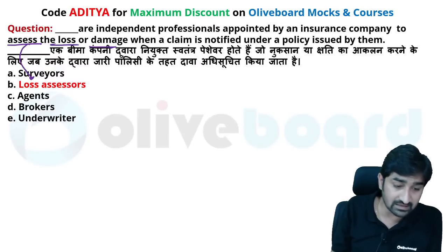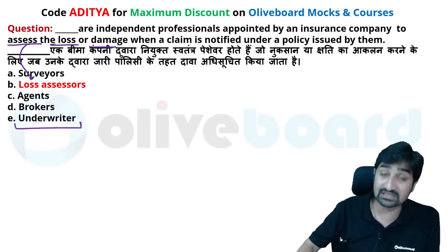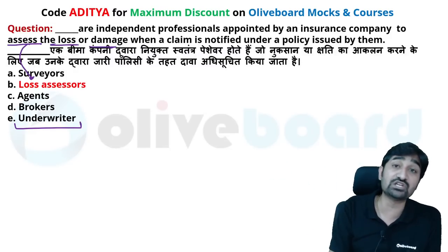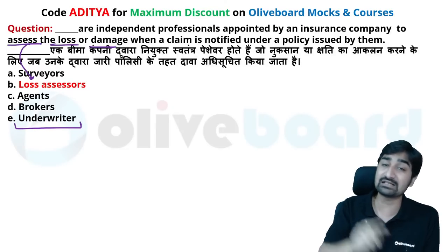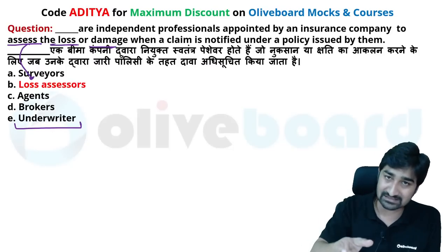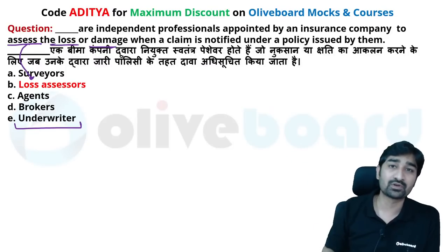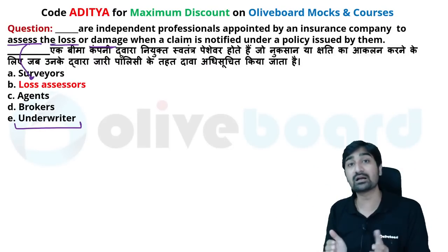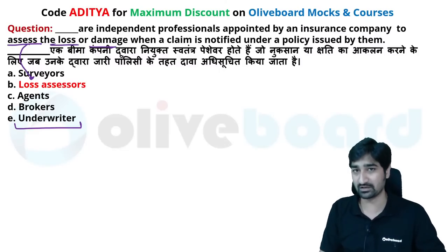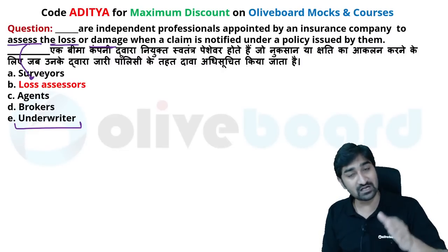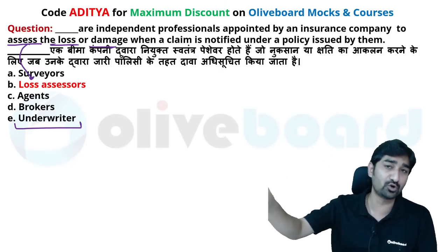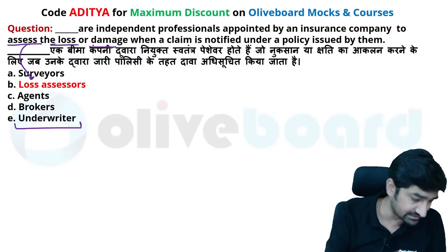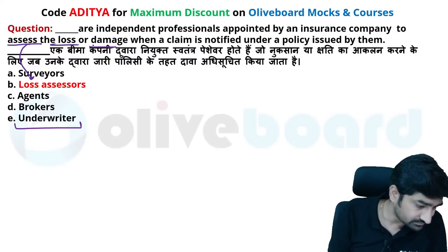An underwriter's task is to assess the risk associated with the insured property. The underwriter's task starts before giving the insurance policy. A loss assessor's task is at the time of the insurance claim — the loss assessor assesses the insurance claim loss. So the underwriter works before the insurance plan is given, and the loss assessor works after a loss occurs to assess it.